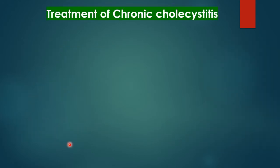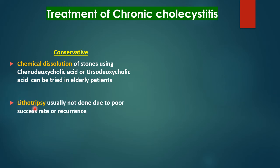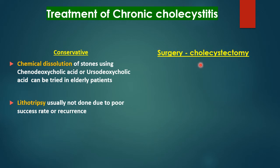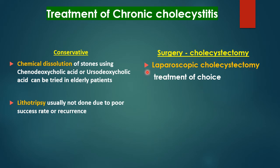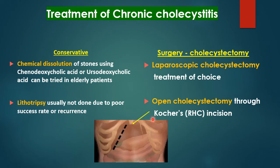Treatment of chronic cholecystitis can be conservative — chemical dissolution using ursodeoxycholic acid and chenodeoxycholic acid, or lithotripsy where stones are broken down by ultrasonic waves. However, the success rate is minimal and treatment is very long-term, so these conservative treatments have generally given way to surgical treatment — cholecystectomy. Laparoscopic cholecystectomy is the treatment of choice for chronic cholecystitis. Open cholecystectomy through a right hypochondrial Kocher's incision may at times be required due to massive adhesions.